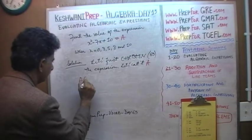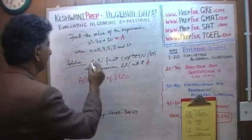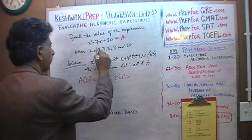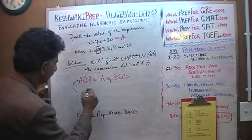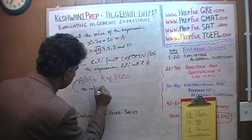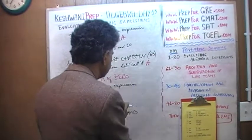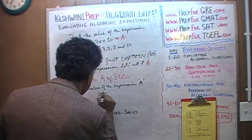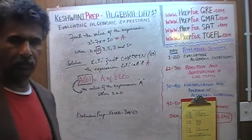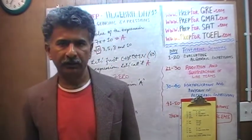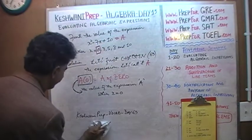So what we are asked to find is A of 0. This is how it's read: A of 0. What does A of 0 mean? It means the value of the expression A when x is 0. If someone says find A of 0, they have an expression named A and they want you to find its value when x happens to be 0.